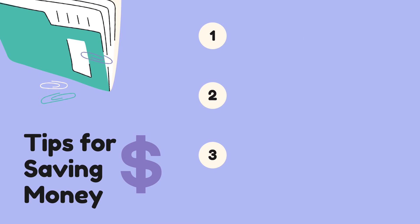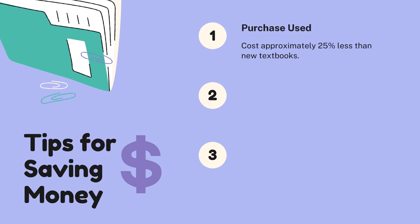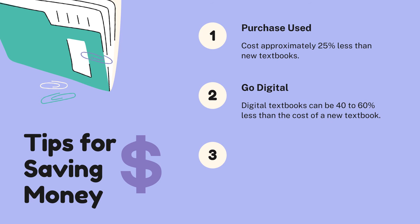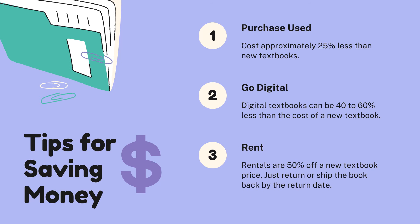Some money saving tips: purchase a used textbook if available — used copies cost approximately 25% less than new textbooks. Go digital — digital textbooks can be 40% to 60% less than the cost of a new textbook. And rent your textbook — used textbook rental prices are on average more than 50% off the new textbook price. Simply bring or ship the textbook back to the store by the return date on your receipt.